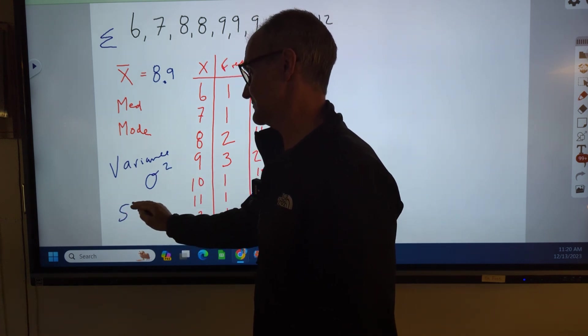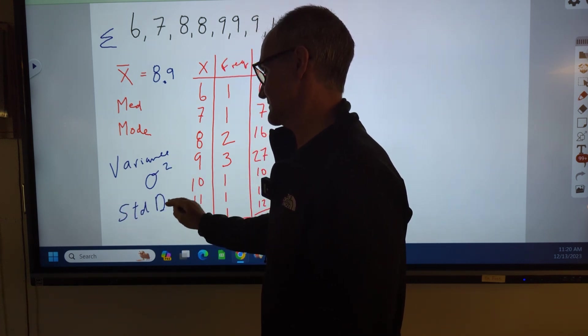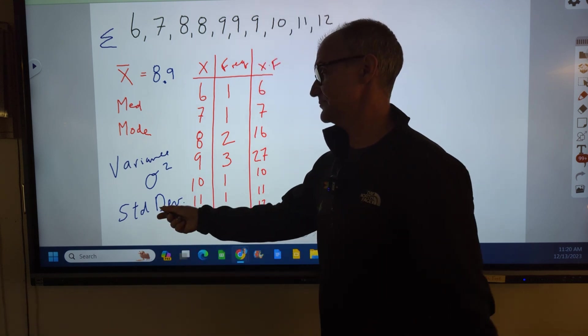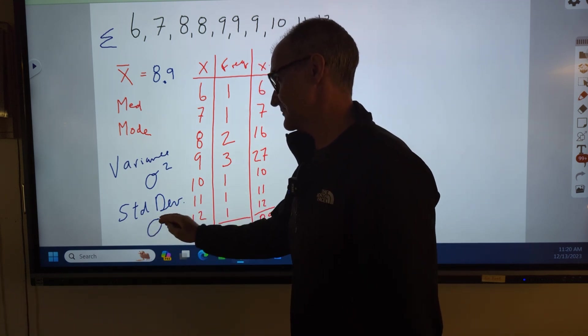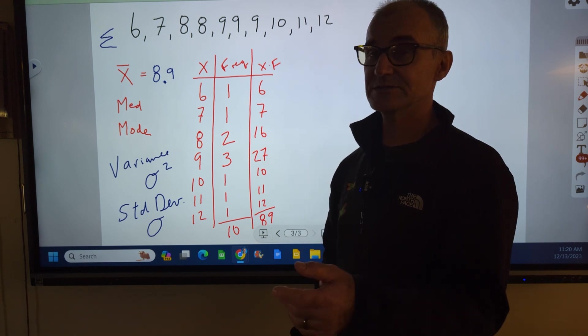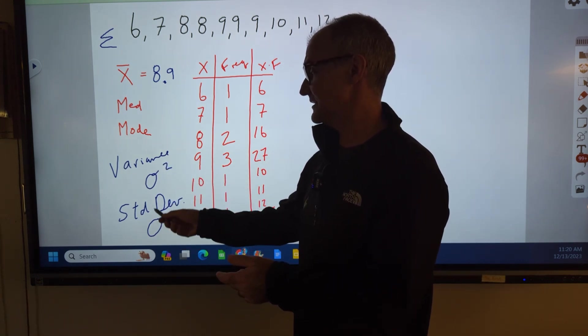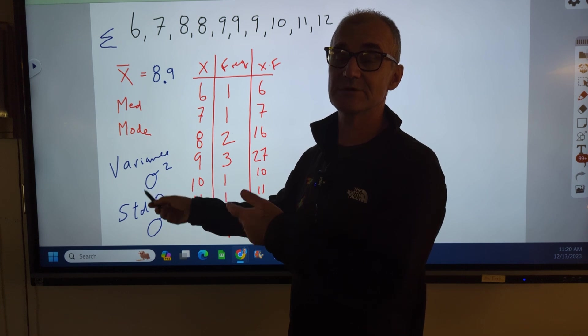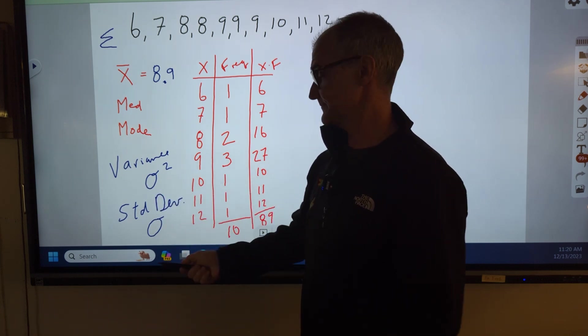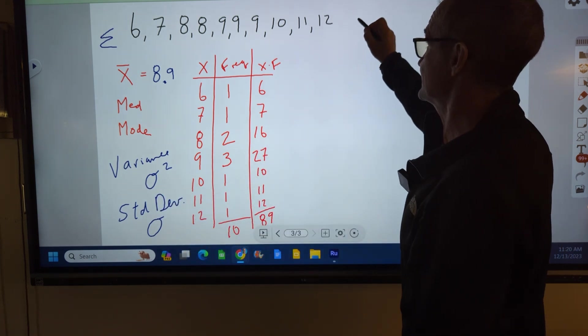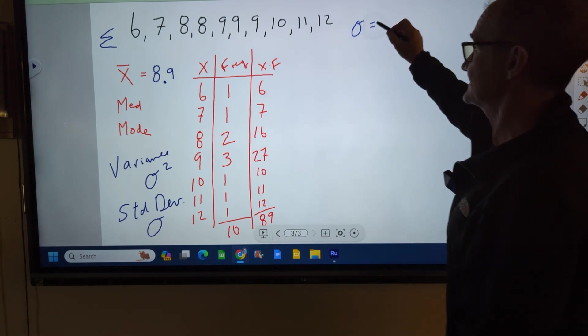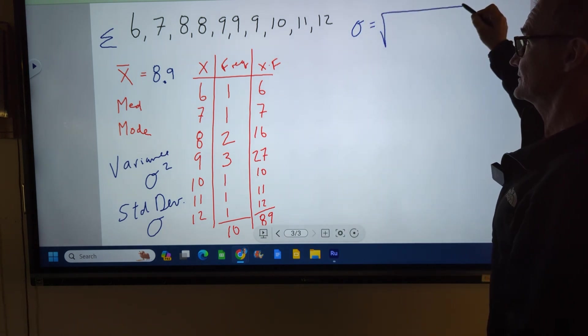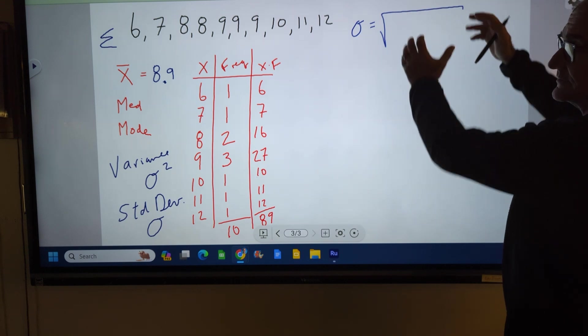And standard deviation is really very similar, just usually used more often. It is represented with a lowercase sigma. The only difference between variance and standard deviation is you take the square root of this number to get standard deviation. So standard deviation is defined as the square root of variance.